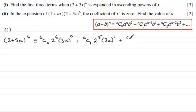Last term, third term will be 6C2, 2 to the power 4, and then 3x to the power 2. Don't forget to put plus and so on, even though we're asked to go up to the first three terms.